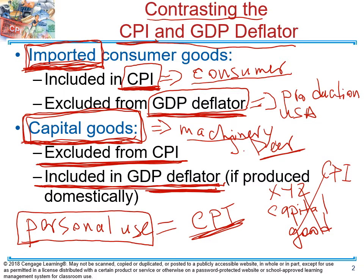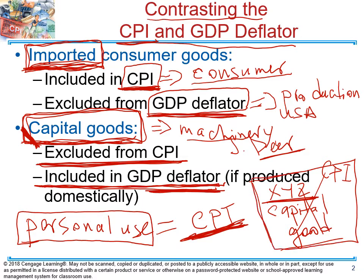You need to understand the difference between purchasing goods for personal use versus for a company to produce a final good. If I'm purchasing a computer for personal use at home, that's part of the CPI. But if corporation XYZ purchases a computer — produced in the United States — that's a capital good used to produce a final good and service. It's not part of the CPI, but it is part of the GDP deflator.